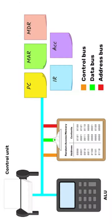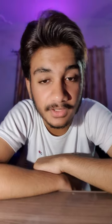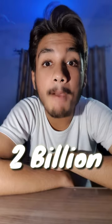Clock speed is the number of cycles your CPU executes per second. For example, if the processor is 2 GHz, then it will execute 2 billion instructions per second.